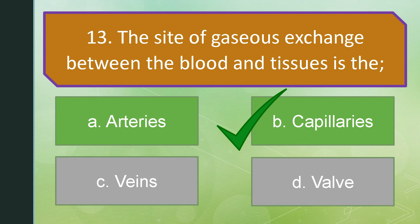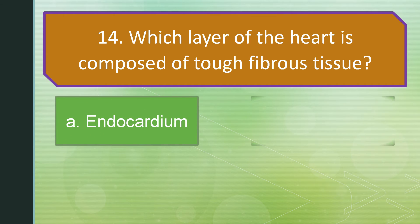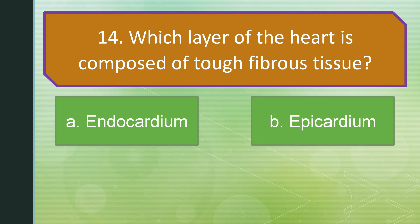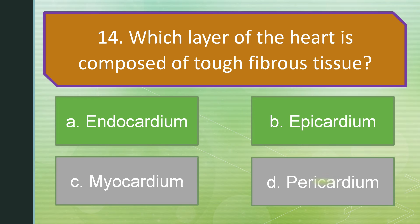Number 14. Which layer of the heart is composed of tough fibrous tissue? Is it letter A: Endocardium? Letter B: Epicardium. Letter C: Myocardium. Or letter D: Pericardium. The correct answer is letter D: Pericardium.